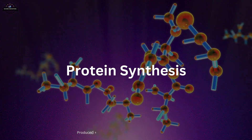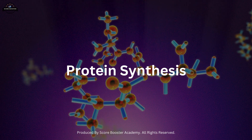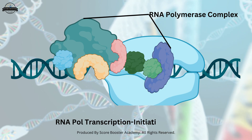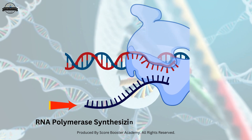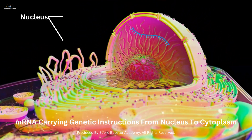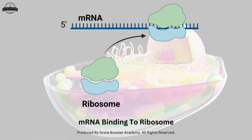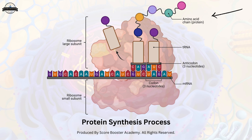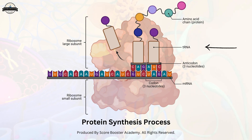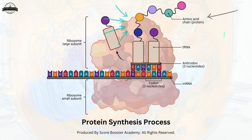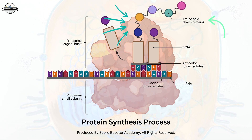Now let's delve into the intricate dance of protein synthesis, where RNA plays a central role. The process begins with DNA unwinding its double helix structure, exposing the genetic code. RNA polymerase, the enzyme responsible for transcription, then synthesizes a complementary RNA strand using one of the DNA strands as a template. This newly formed mRNA carries the genetic instructions from the nucleus to the cytoplasm. Once in the cytoplasm, the mRNA binds to a ribosome, where protein synthesis occurs. The genetic code embedded within the mRNA is translated into a specific sequence of amino acids — the building blocks of proteins — by the coordinated action of tRNA molecules. With each triplet of mRNA bases, known as a codon, corresponding to a specific amino acid, the ribosome assembles the amino acids into a polypeptide chain.